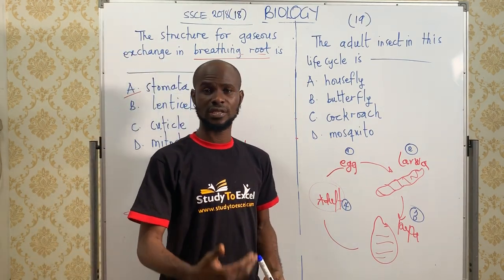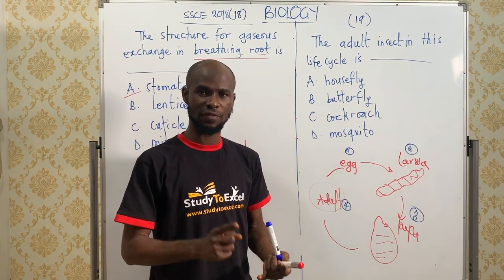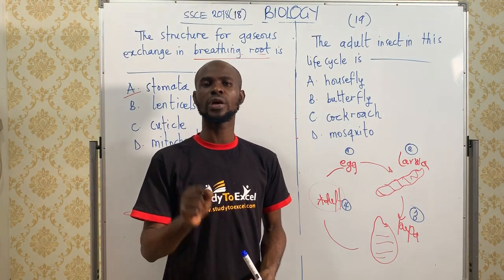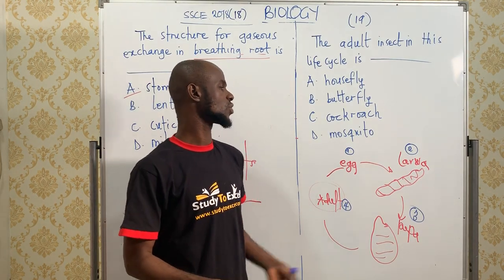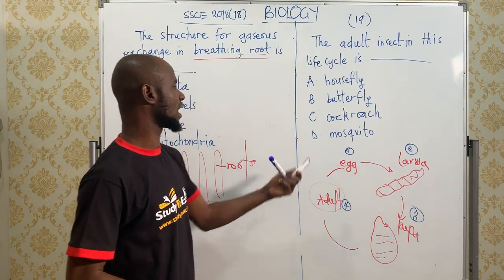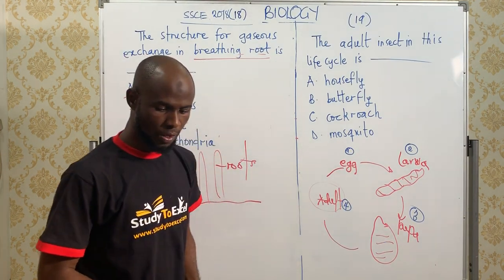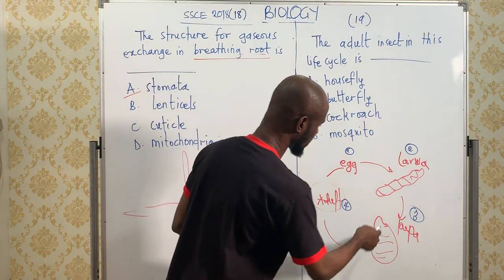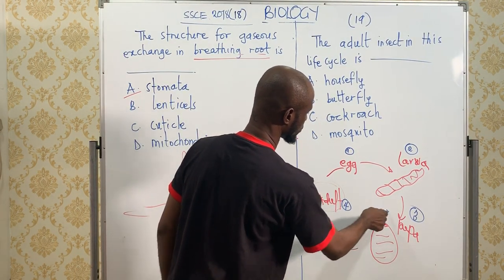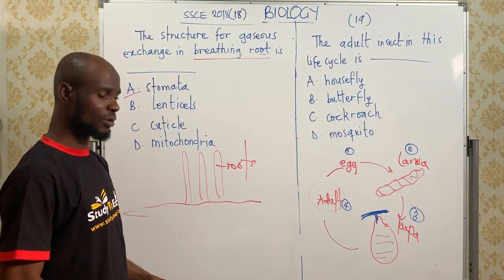An example of insects that undergo complete metamorphosis — we have the housefly, we have the butterfly — while the cockroach undergoes incomplete metamorphosis. So let's try to identify the adult of this particular life cycle, where we have the larva and we have the pupa. The pupa is located on a tree branch, and that is going to give us a clue on how to get the adult.